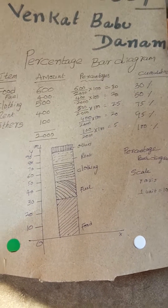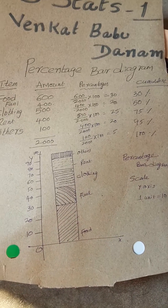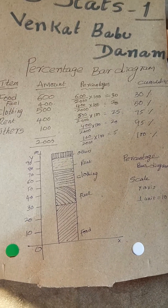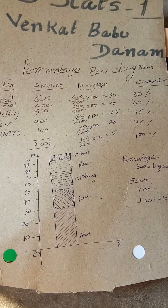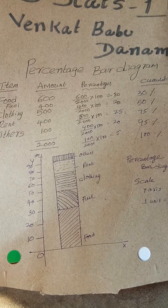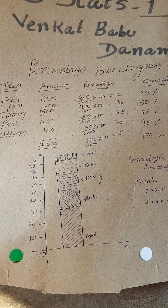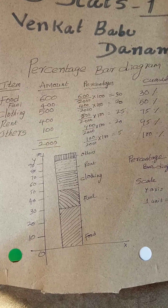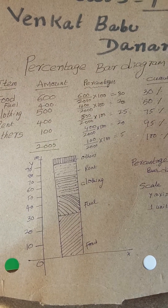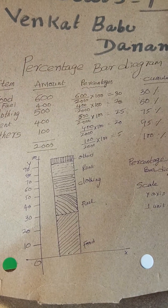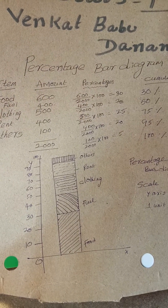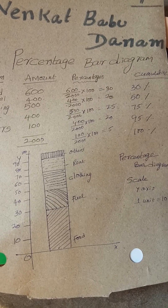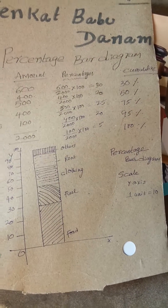Percentage means hundred, my dear students, so we have to convert this into 100. 600 by 2000 into 100, 400 by 2000 into 100, 500 by 2000 into 100, 400 by 2000 into 100 — like this.